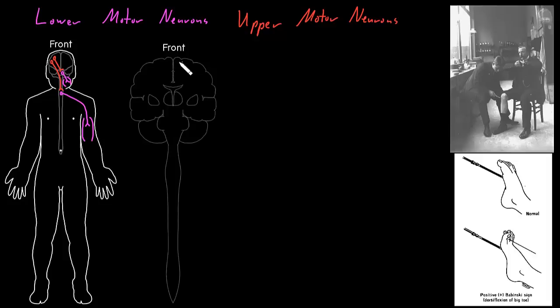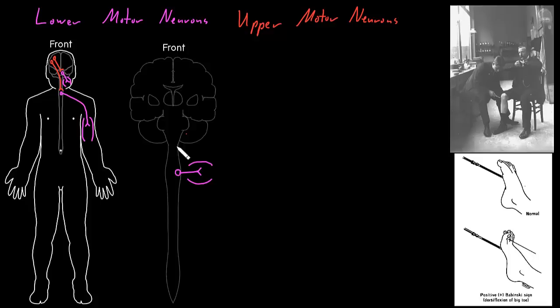Here we have the cerebrum up top, the brain stem with the cerebellum behind it, and then beneath it is the spinal cord. Let's think about a lower motor neuron in the higher part of the spinal cord on the left side. The lower motor neuron has its soma inside the spinal cord, and then it sends its axon out through spinal nerves and their smaller branches until it synapses on some of the skeletal muscle cells in the muscle it's going to control.